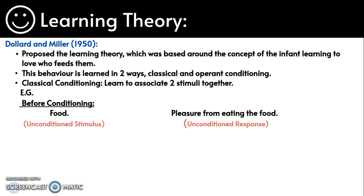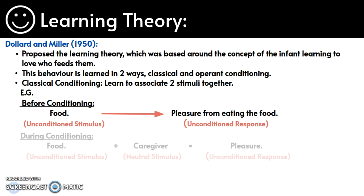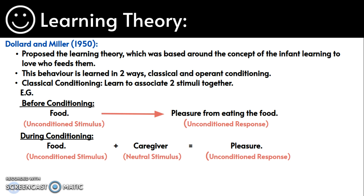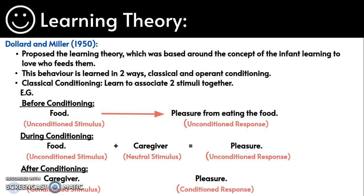Classical conditioning is when we learn to associate two stimuli together. Before conditioning, the food is the unconditioned stimulus and the unconditioned response is pleasure from eating the food. During conditioning, food is the unconditioned stimulus and the neutral stimulus of a caregiver is introduced to produce an unconditioned response of pleasure. After conditioning, the caregiver becomes a conditioned stimulus and pleasure becomes a conditioned response.